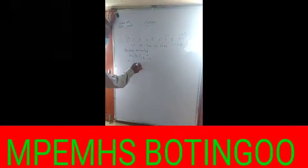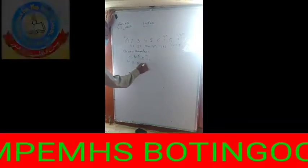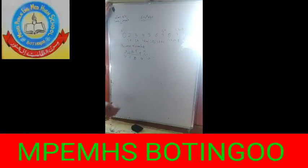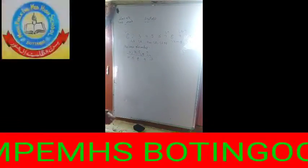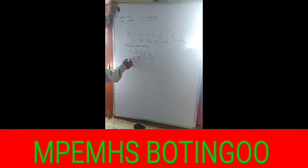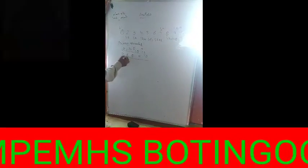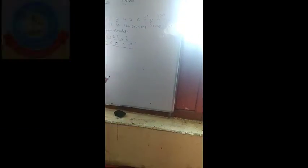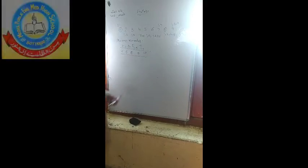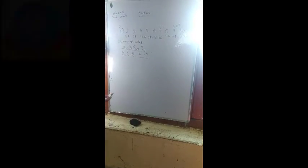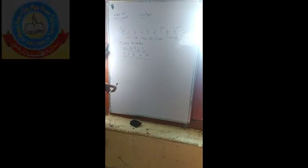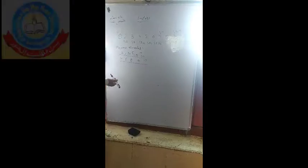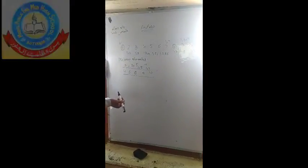Six, eight, nine, and ten are called composite numbers. Four is a composite number, six is a composite number, eight is a composite number, nine is a composite number, and ten is a composite number. Four has three factors, six has four factors, and eight has four factors.